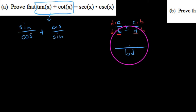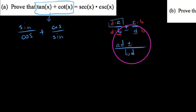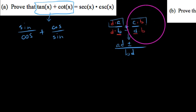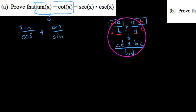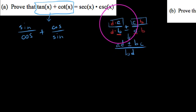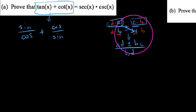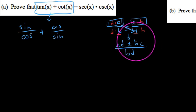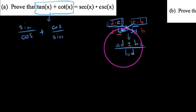So over here we'd take the first fraction times d on top and bottom, and over here we'd take the second times b on top and bottom. We'd end up with ad plus bc all over bd. Notice that it's the product of the two original denominators on the bottom, and on top: a times d — where d was just the second fraction's denominator — plus c times b, where b was the first fraction's denominator. It's just a quick method for adding and subtracting fractions.